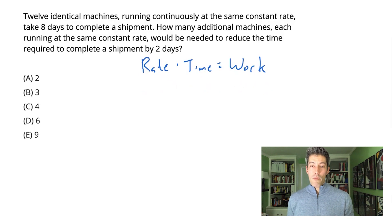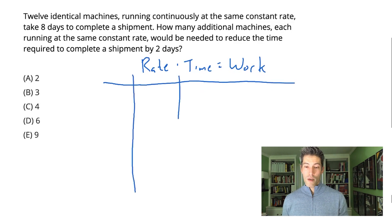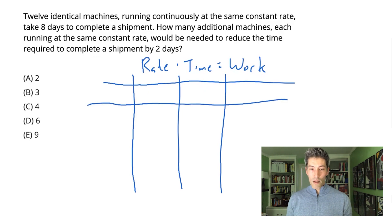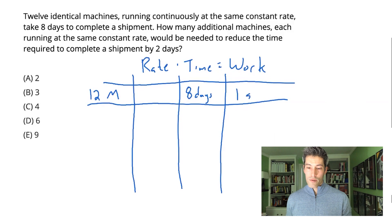The other thing we want to keep in mind on a problem involving multiple machines working or multiple people helping to do a job is we want to create a rate chart to help keep track of all these moving pieces. The first thing I'm going to fill out in my rate chart is information about this 12 identical machine scenario. I'll just call that 12M. What I know about these 12 machines is they take eight days to complete a shipment. So I'll write eight days for the 12 machine's time, and the work they do is one shipment.